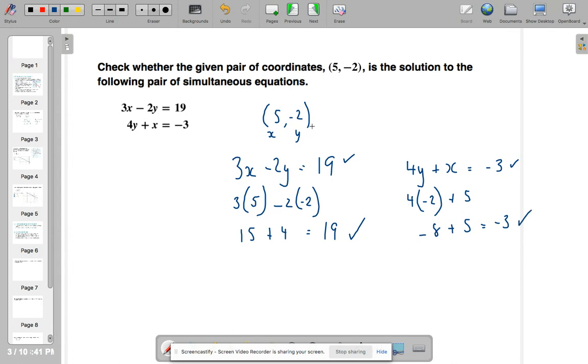So 5 negative 2 satisfy those both equations. Therefore, it is a solution for those two simultaneous equations.